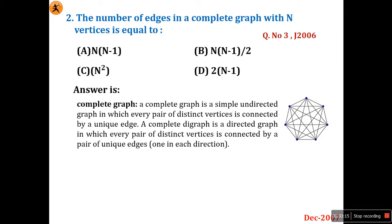A complete graph is a simple undirected graph in which every pair of distinct vertices is connected by a unique edge. Every pair of vertices is connected with all other vertices in the graph, so all vertices have equal degree. It may also be a directed graph where every pair of distinct vertices is connected by a pair of unique edges, one in each direction. In this diagram, each vertex is connected with a single edge to all other vertices.